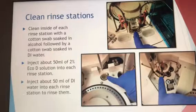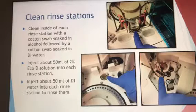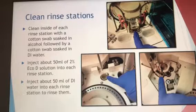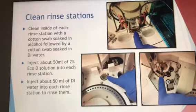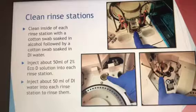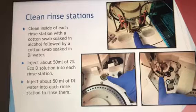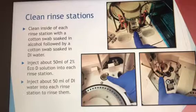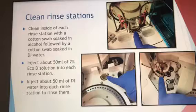The 601 also has wrench stations, and you clean those similarly to how you did them on the 501 side, with a slight difference at first. There are three of them. First, clean inside with a cotton swab with alcohol, then a cotton swab with DI water. Then fill with the 2% Echo DE solution, followed by DI water to rinse. The 50 mLs is an approximate value — don't worry if it's not exact, it just gives you a general idea of how much to use.